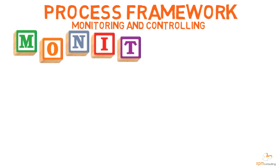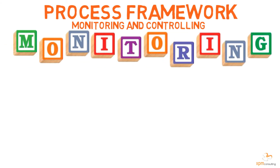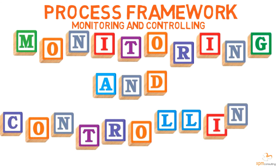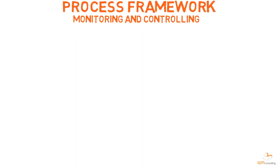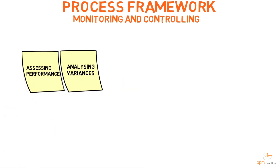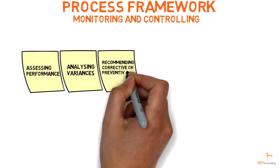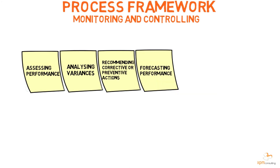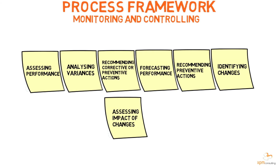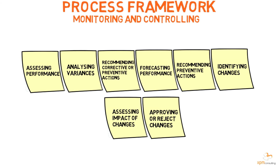The Monitoring and Controlling Process Group includes all the processes required to align actual performance with planned performance, and to align the plan with value. Examples of monitoring and controlling activities include: assessing actual project performance, analyzing variances, recommending corrective or preventive actions, forecasting performance, recommending preventive actions when a potential variance is forecasted, identifying changes, assessing the impact of changes, and approving or rejecting changes. These key activities are used across the project knowledge areas with slight adaptations of terminology.